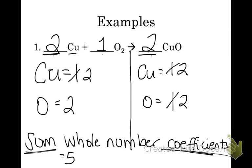Also, say for example we end up with coefficients of 4, 2, and 4. I know I can reduce 4, 2, and 4 down to 2, 1, and 2. So we want the whole number coefficients or the lowest ratio of the whole number coefficients.